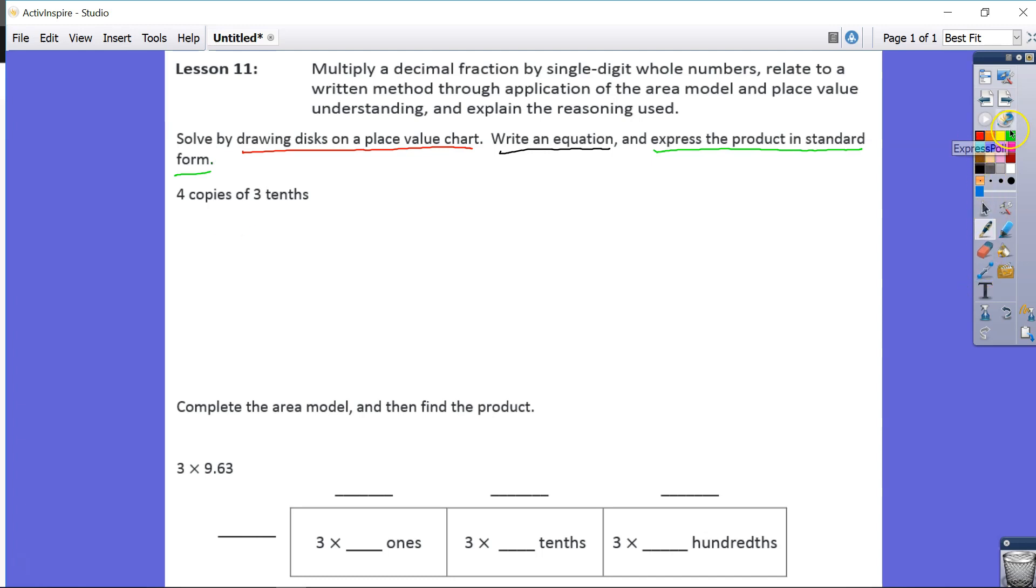First, our place value chart. We know that we only have tenths. So now, how many tenths do we have? That's the question. We have four copies of three tenths.